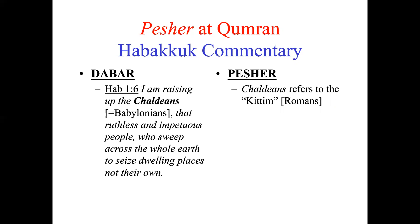Another example: the text says 'I am raising up the Chaldeans' — meaning the Babylonians — 'that ruthless and impetuous people who sweep across the whole earth, the seas, dwelling places not their own' — Habakkuk chapter one and verse six. But then the Pesher interpretation says the Chaldeans refer to the Ketim, the coastlands, by which they mean the Romans.